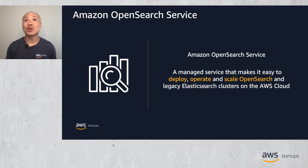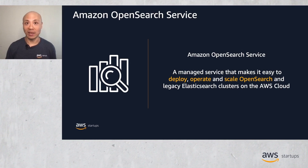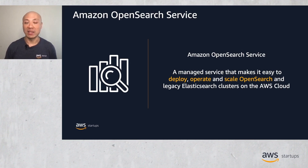The Amazon OpenSearch service is a fully managed service that can help you get started quickly to address these use cases. It allows you to deploy, operate, and scale both OpenSearch clusters as well as legacy Elasticsearch clusters in the AWS cloud, and it allows you to do so in a cost-effective, secure, and scalable manner.